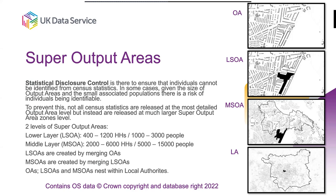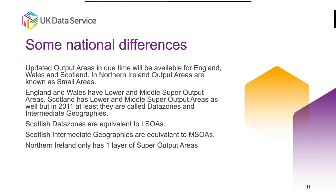There is some minor terminology difference between England and Wales, Scotland, and Northern Ireland. In England and Wales you have output areas, LSOAs and MSOAs. In Scotland you have output areas; and in 2011 you had data zones and intermediate geographies, which are equivalent to LSOAs and MSOAs respectively. In Northern Ireland the lowest geographies are called small areas, equivalent to output areas, and in 2021 they will produce super output areas for Northern Ireland — just a single layer, equivalent to LSOAs. Because the Scotland census only happened this year, the geographies for Scotland probably won't appear until next year when they start producing census statistics.